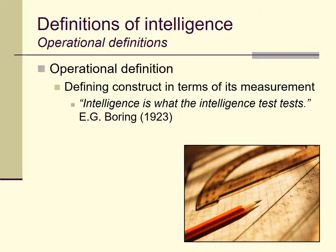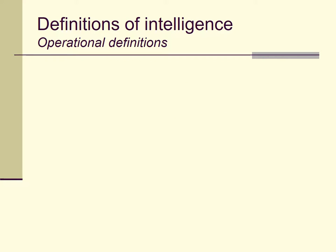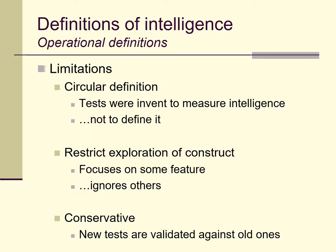In psychology, we lean heavily on operational definitions because we're almost always dealing with abstractions — constructs we can't easily or directly observe. This has been true throughout the history of psychology. E.G. Boring, a famous psychologist and historian, joked about this way back in the 1920s, saying that intelligence is what the intelligence test tests. That may be sort of funny, but there are problems with this definition. It's circular — we're inventing tests to measure intelligence, not to define it. There's also the risk that in relying too heavily on an operational definition, we restrict our exploration of the construct.